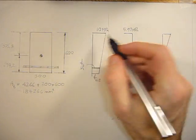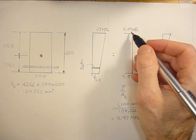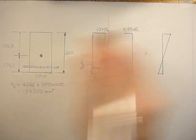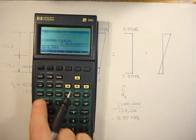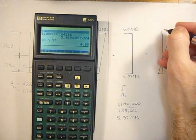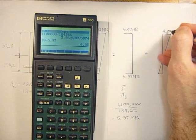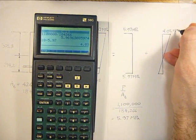We don't know what the stress is, but we know that 10 minus 5.97 would have to balance it. So 10 minus 5.97 is the stress in the top fibers, 4.03 MPa.